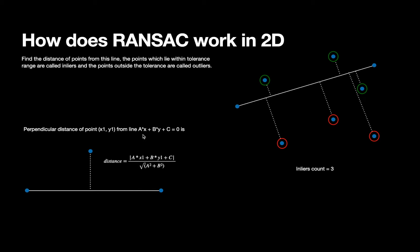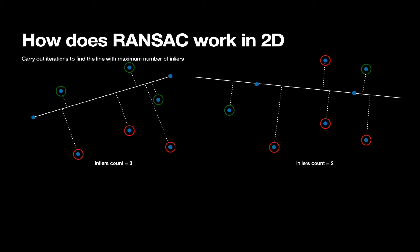As we know, the perpendicular distance of a point with coordinates (x1, y1) from the line ax + by + c = 0 is given by the standard distance formula. For any given line in an iteration, we find the distance of all the points. The points whose distance is within a tolerance limit are called inliers, and the points whose distance from the line is greater than the tolerance limit are called outliers.